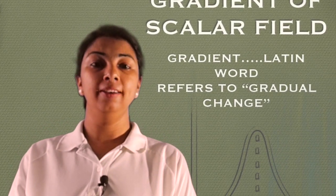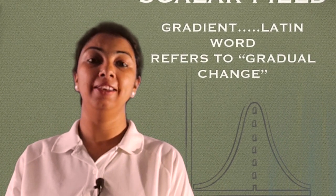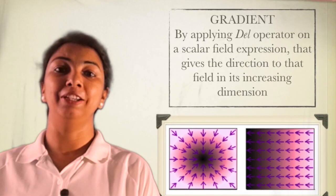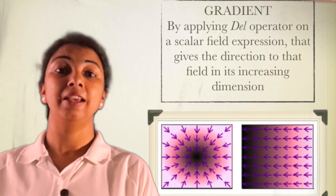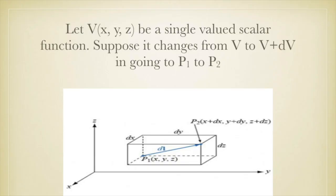Gradient is a Latin word which means gradual change in any quantity. It is obtained by applying a del operator on a scalar field that gives direction in its increasing dimension.